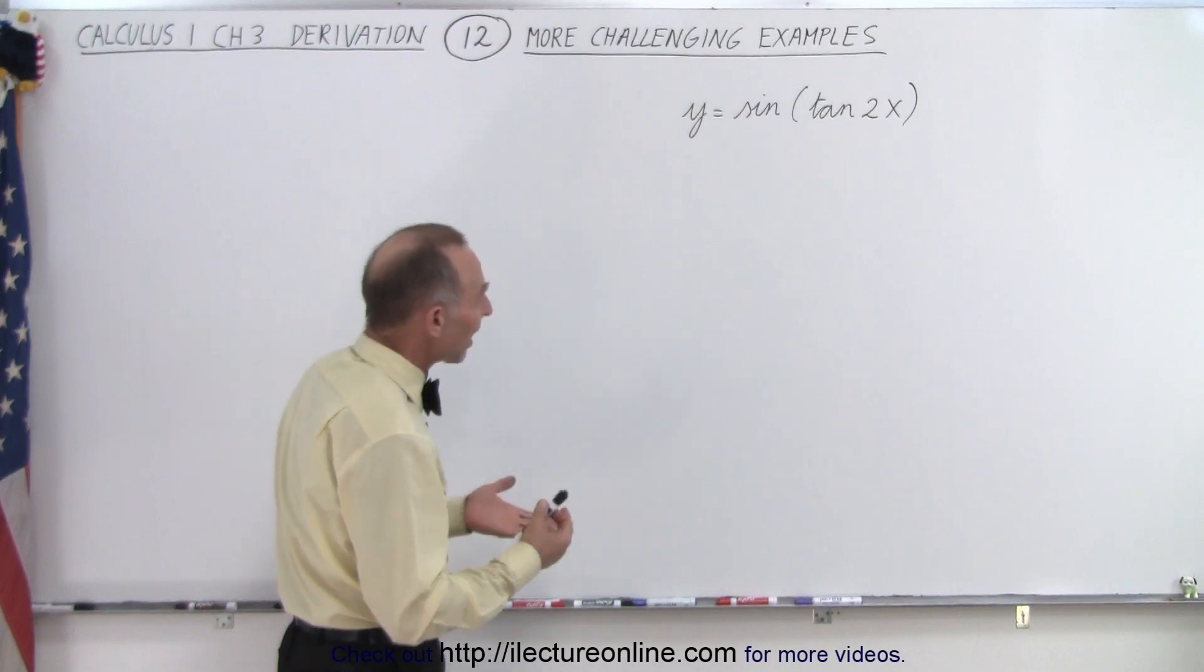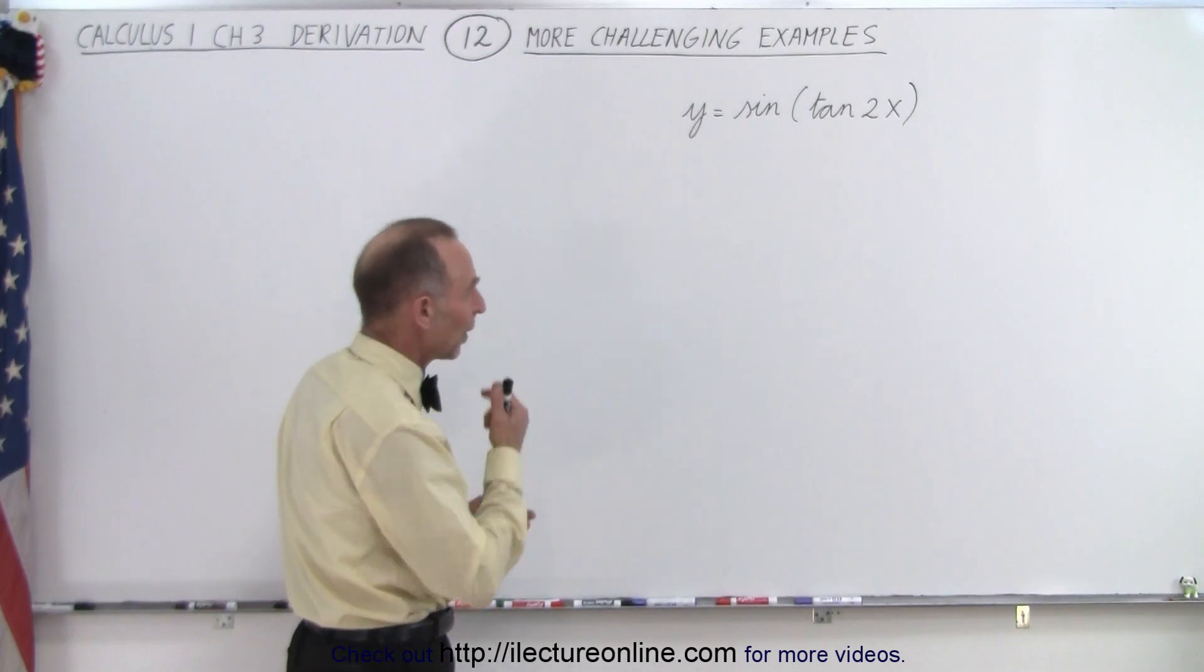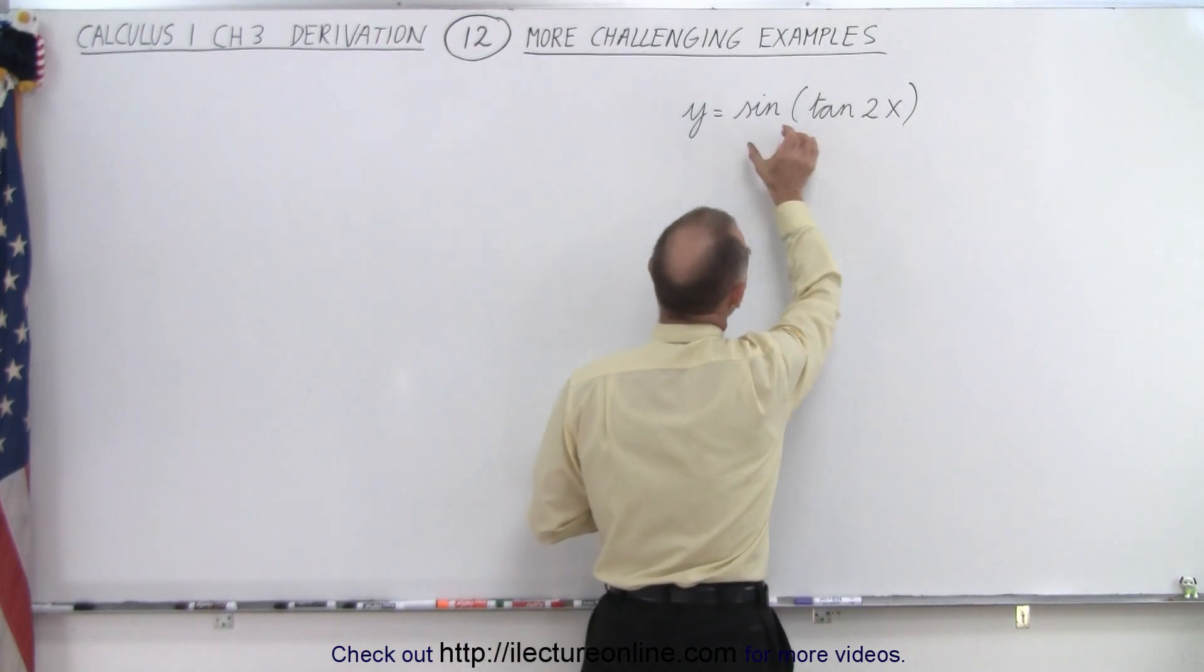So we have y equals the sine of the tangent of 2x. This becomes the argument, the angle of the sine.